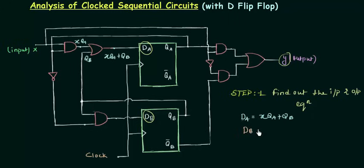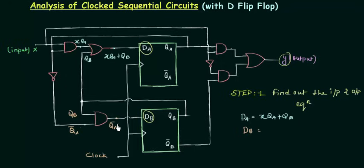Similarly, we find out the expression for DB. It is the output of this AND gate. The first input to this AND gate is QB, and the second input is QA through a NOT gate, so it becomes QA complement. Therefore the output is QA complement AND QB. So DB equals QA complement QB.